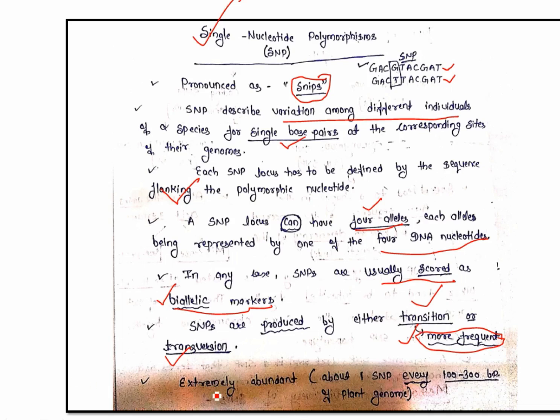SNPs are extremely abundant, which is why they are more useful compared to SSR markers. They are present throughout the genome — about one SNP every 100 to 300 base pairs in a plant genome. So you can imagine how many SNPs exist in a single plant species.